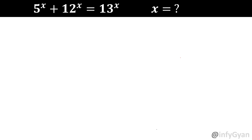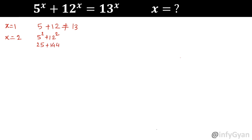How will we solve? Suppose I am putting x equal to 1: 5 plus 12 is not equal to 13, so x equal to 1 is not our solution. Let's try x equal to 2: 5 squared plus 12 squared gives 25 plus 144, which equals 169, and 13 squared is also 169. So x equal to 2 is our solution.